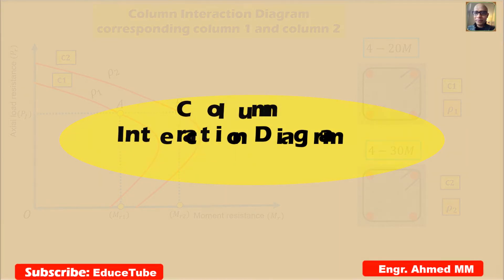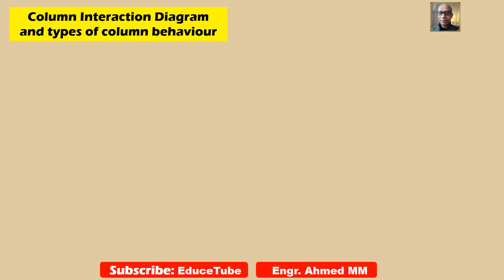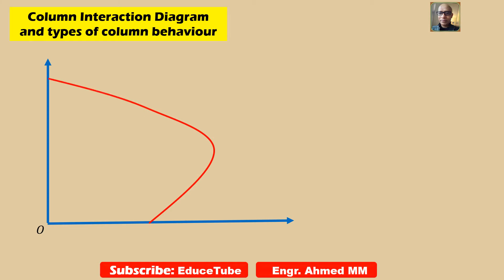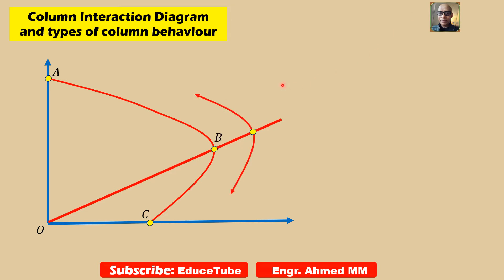Hi everybody. Today I am going to discuss about the column interaction diagram. The axial and flexural resistance of reinforced concrete column sections can be expressed by this column interaction diagram. The behavior of an axially loaded column depends on the magnitude of the load eccentricity.